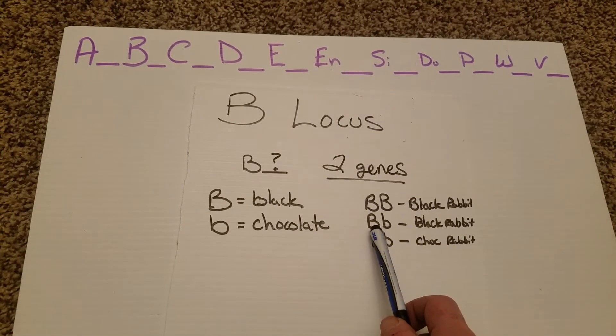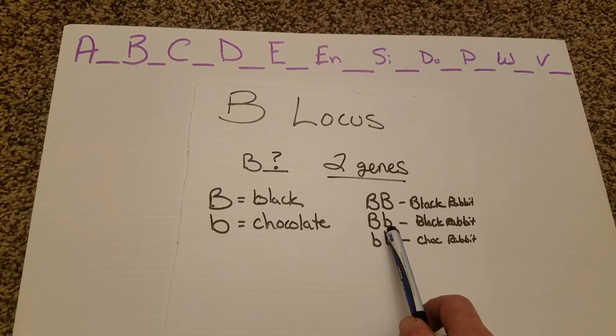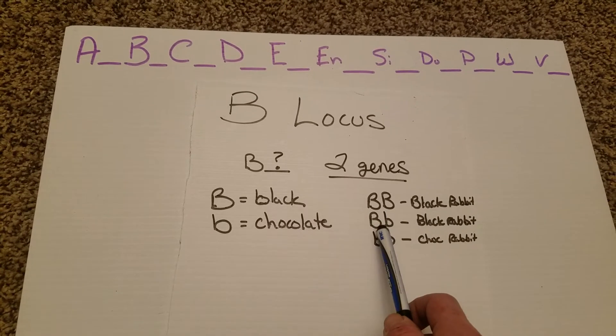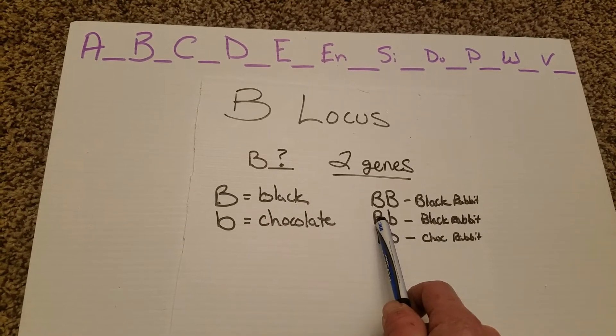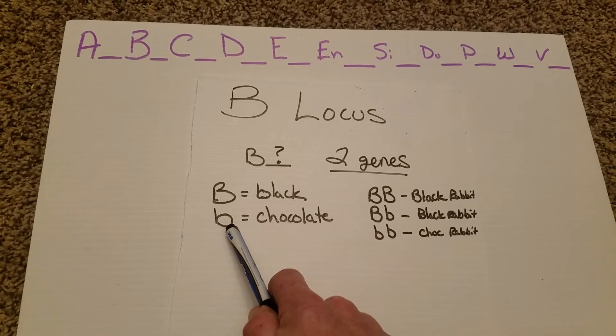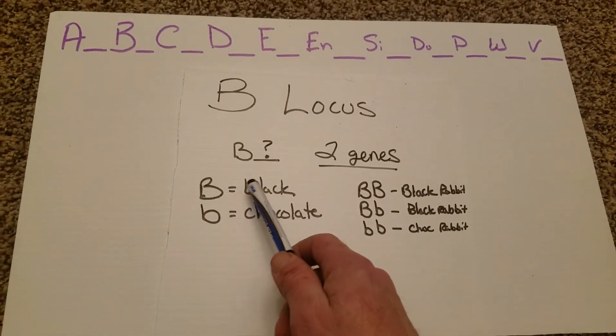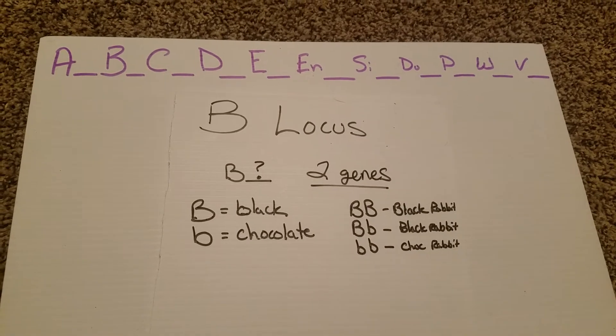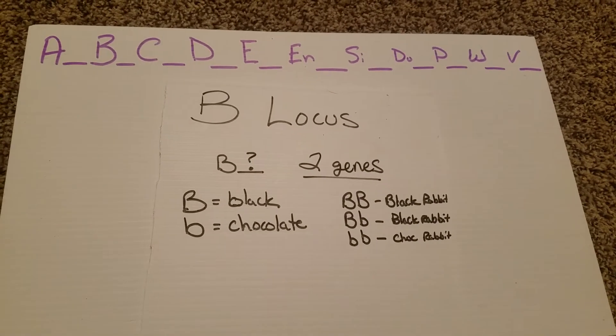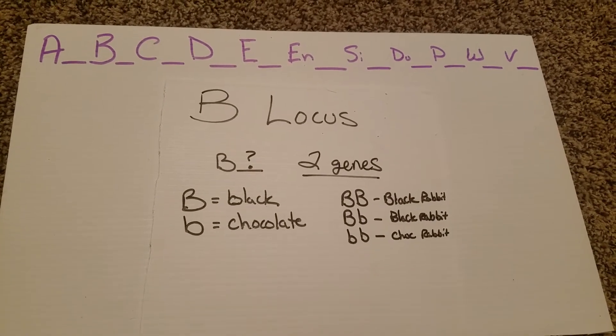The same is true if you have a capital B and a lowercase b, which stands for a black rabbit that carries chocolate. You're still going to get a black rabbit. The reason for that is because black is the more dominant gene at this locus point. It is the top gene.